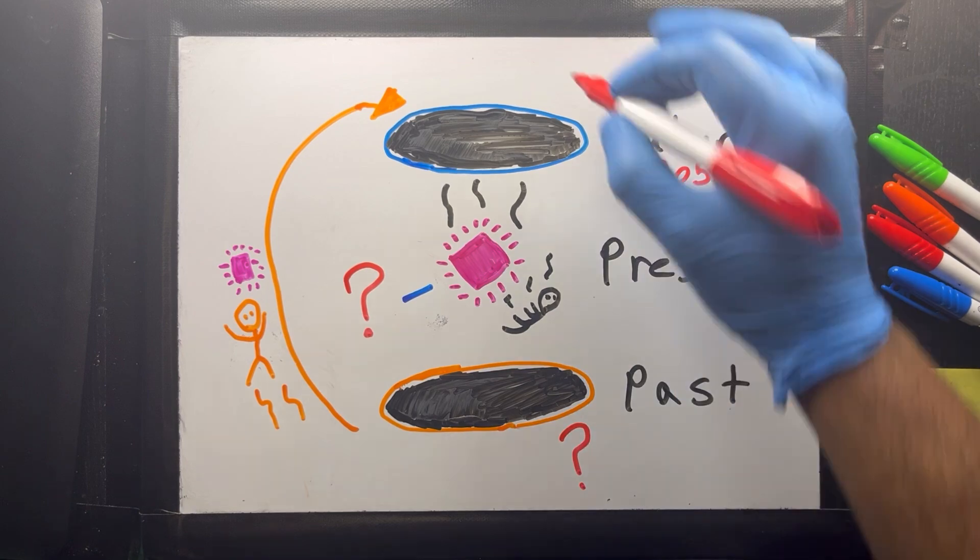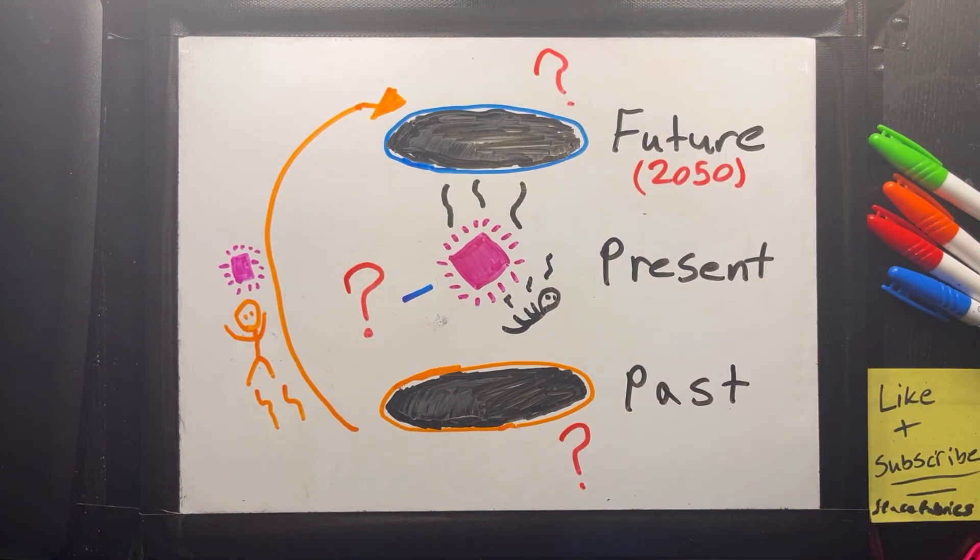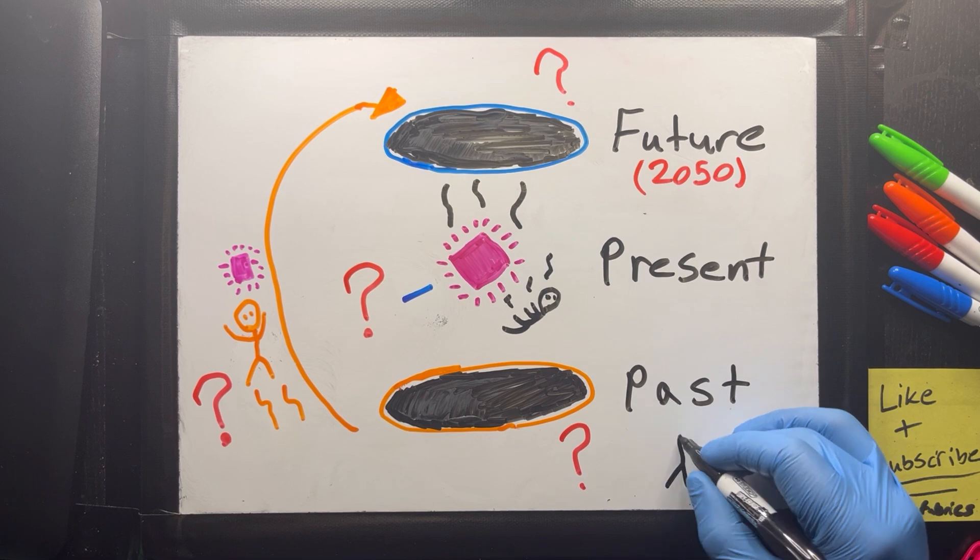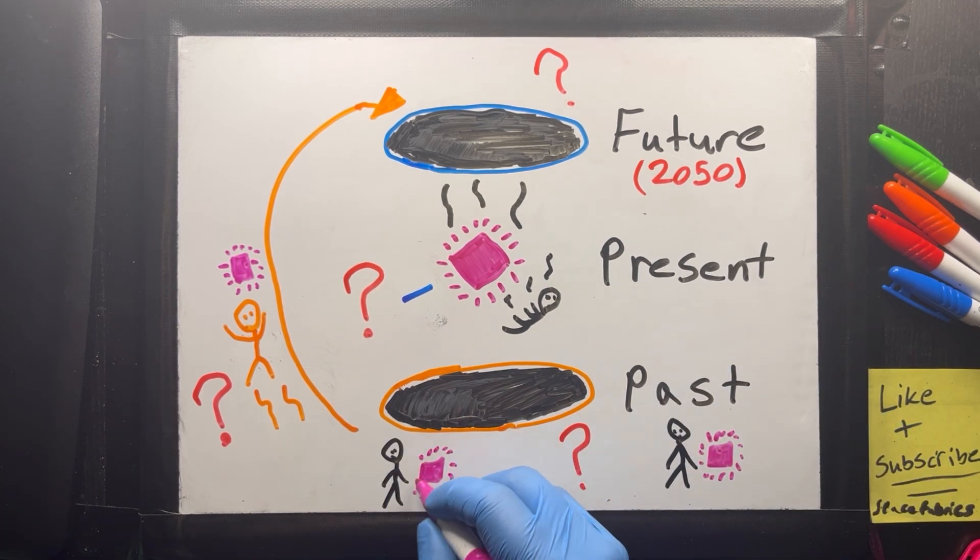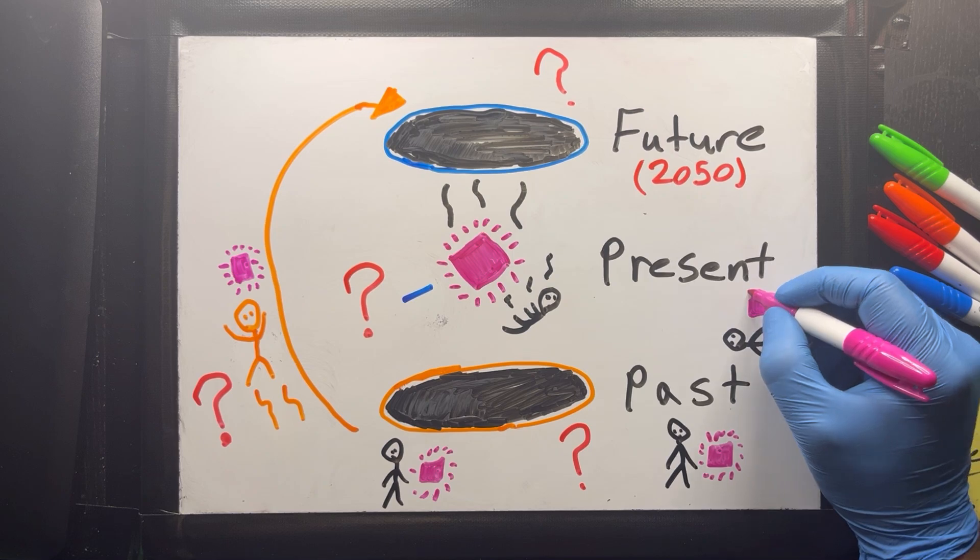It could violate the conservation of energy or information, since the blueprints pretty much appear without actually being created. And is free will affected? Because the physicist might be stuck in a loop, with their actions predetermined by the timeline, making them question whether they have free will.